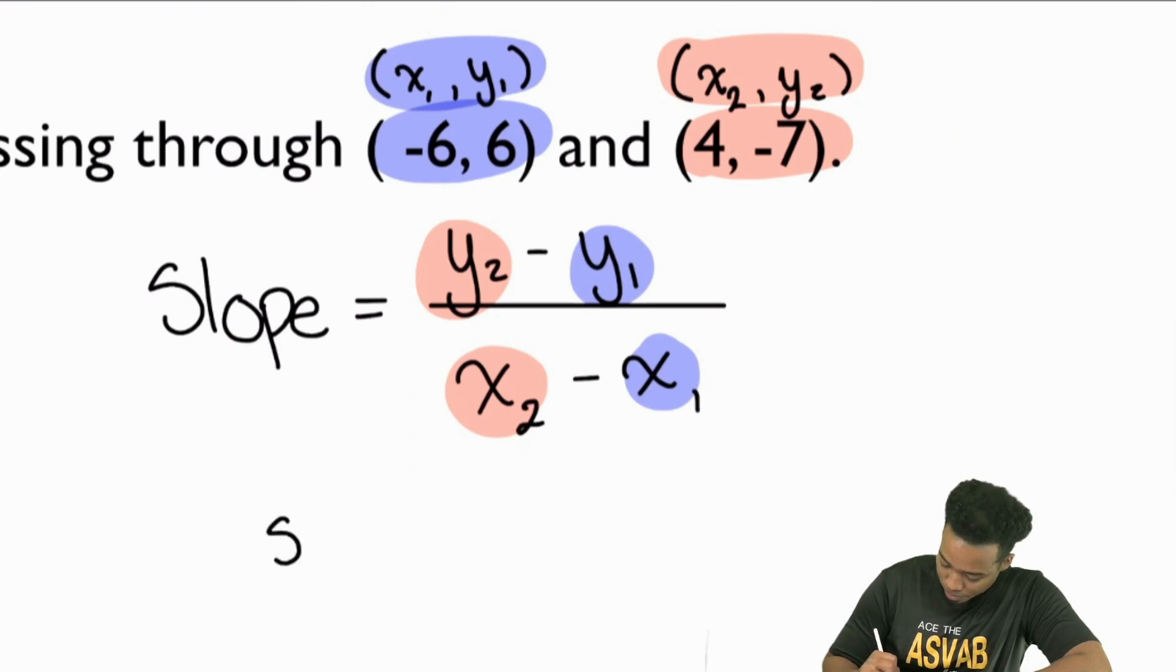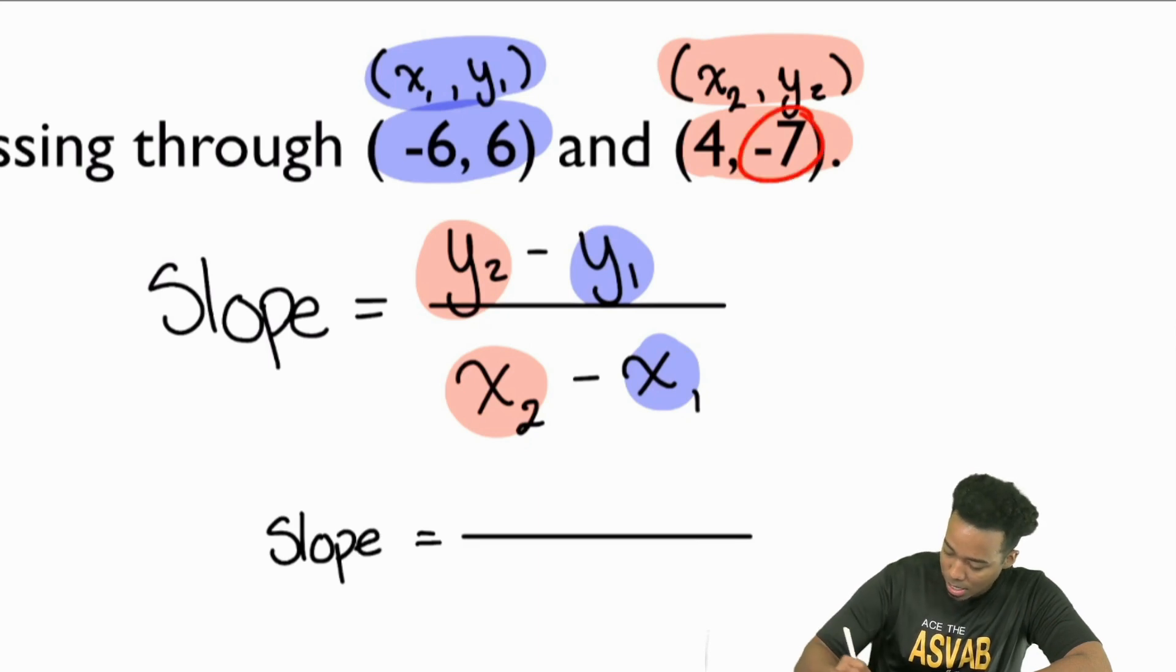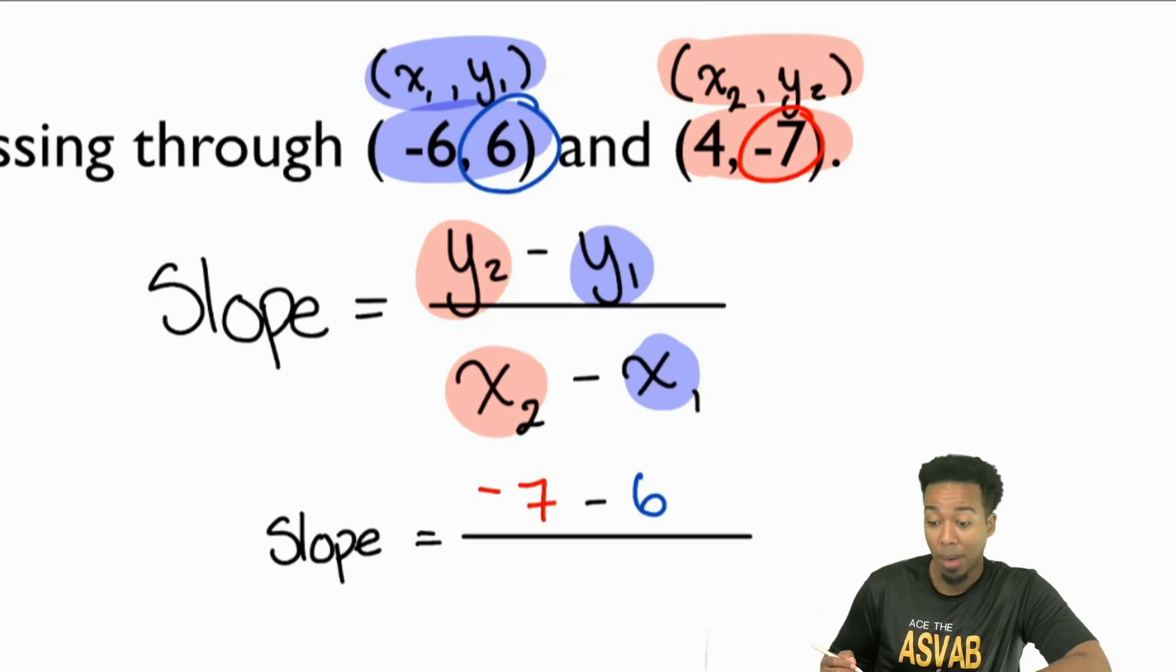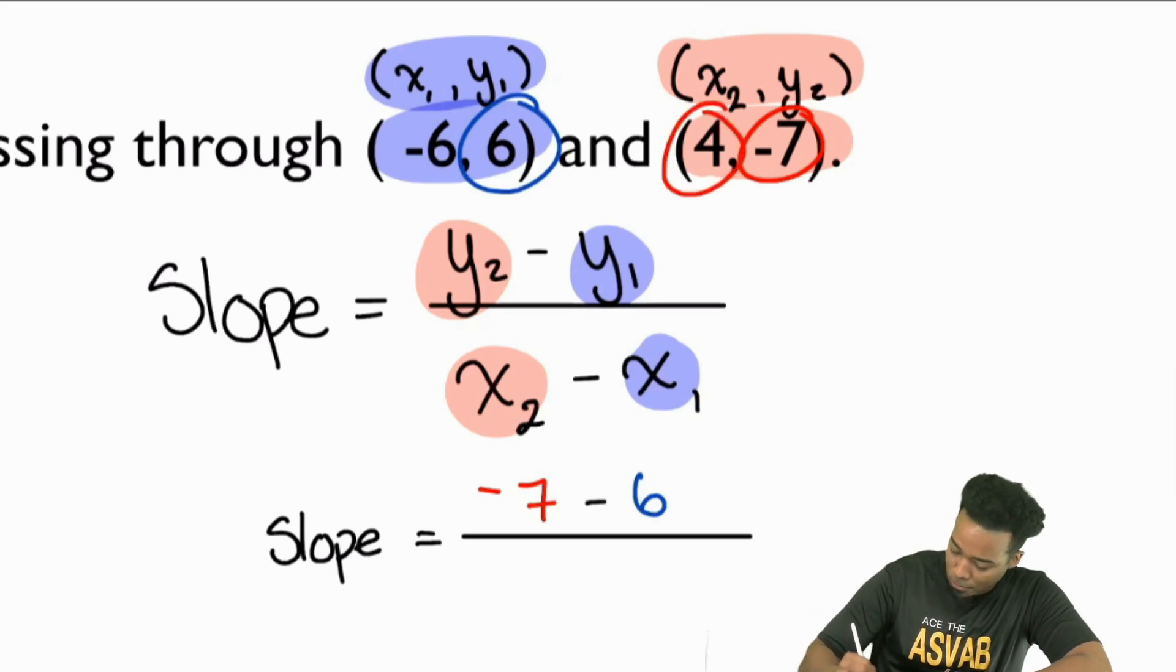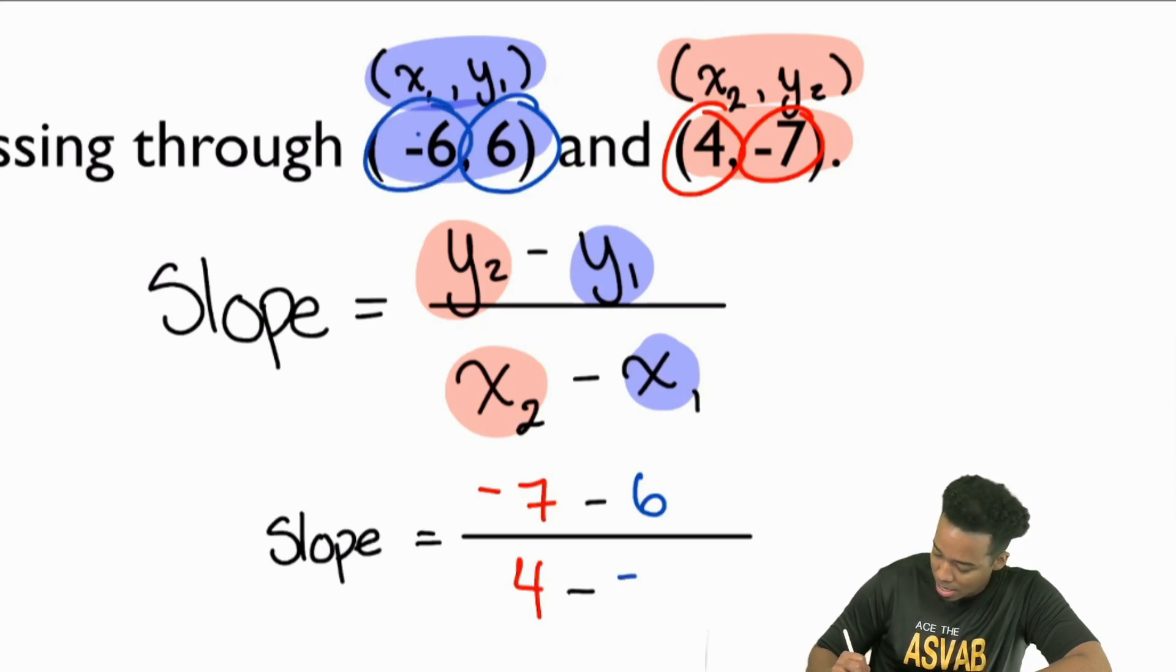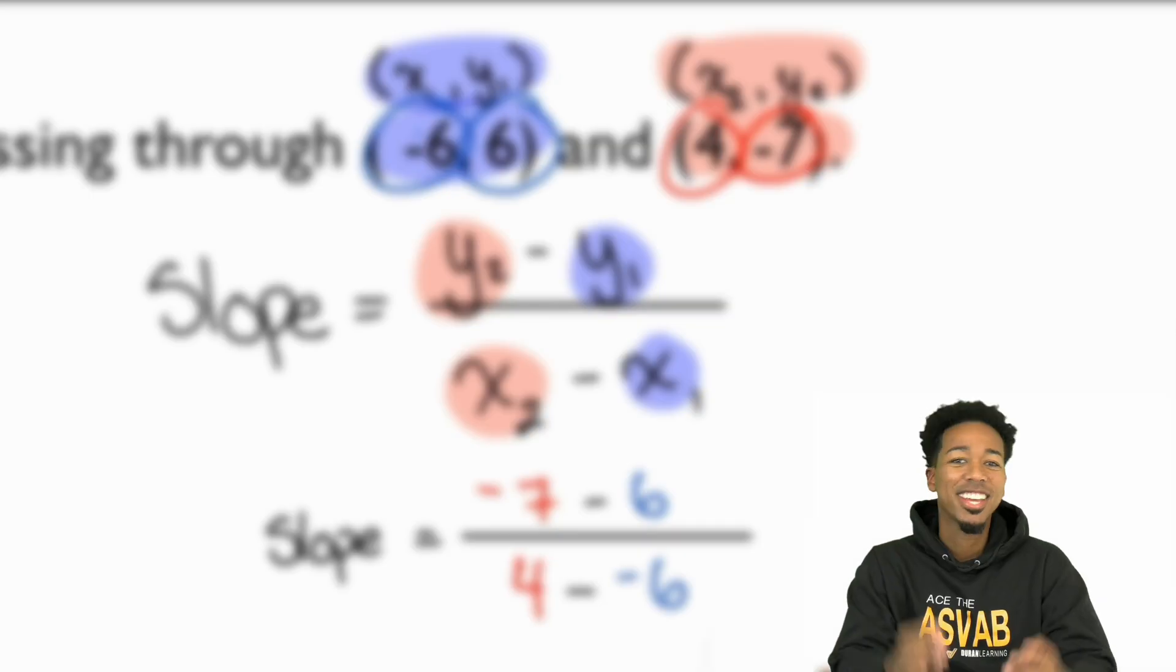So my slope here equals, and let's plug everything in. My y2, what did I see that it was? Negative 7. Minus, what's my y1? That's the y from right there. That's going to be 6. Next up, we have x2 on the bottom. And that's going to be 4. And then we have minus. And then we see that the x1 is going to be negative 6.